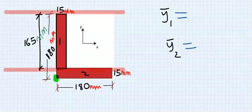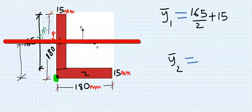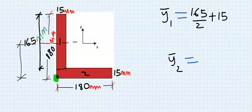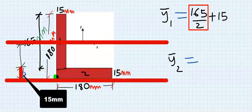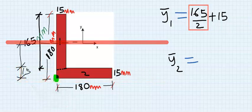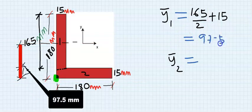For rectangle 1, I will split 165 into 2. Then 165, if you divide it by 2, you're going to get 82.5 and if you add it to 15, you're going to get 97.5. Hence, this becomes 97.5 millimeters.